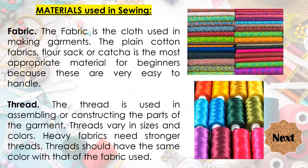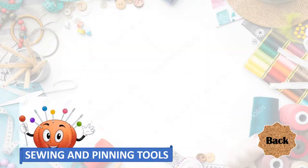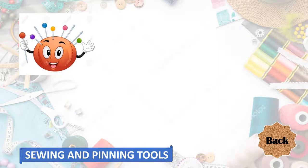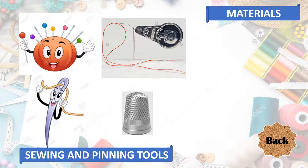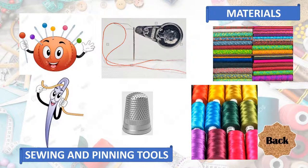The next material is the thread, which is used in assembling or constructing the parts of the garment. Threads vary in sizes and colors. Heavy fabrics need stronger threads. Threads should have the same color as the fabric used — so if you use a red fabric, you are going to use a red thread. The sewing and pinning tools are the pin cushion, the needle, the needle threader, the thimble, and the materials used in sewing are the fabric and the thread.